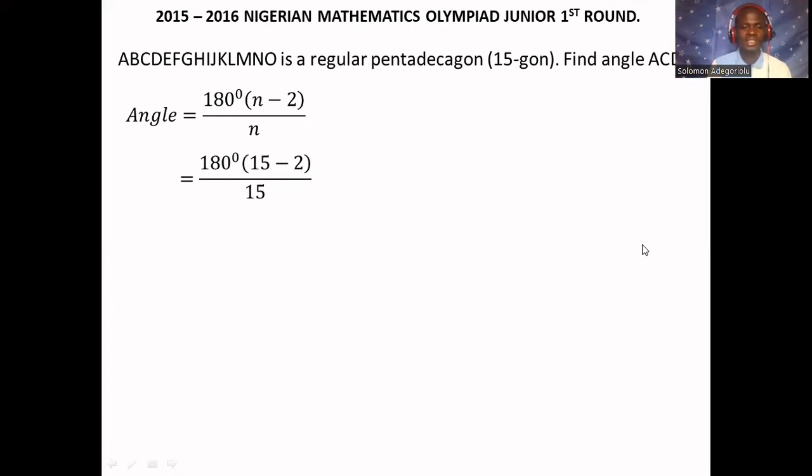15 minus 2 will give us 13. So that will be 180 degrees times 13 divided by 15. And when you simplify these, that's going to give us 156 degrees. That means each interior angle of a regular pentadecagon is 156.